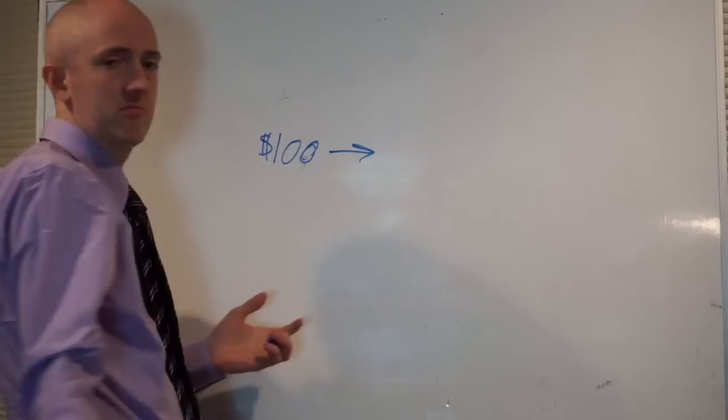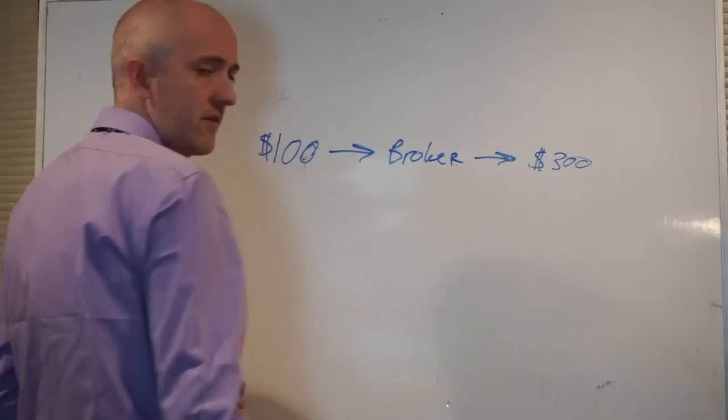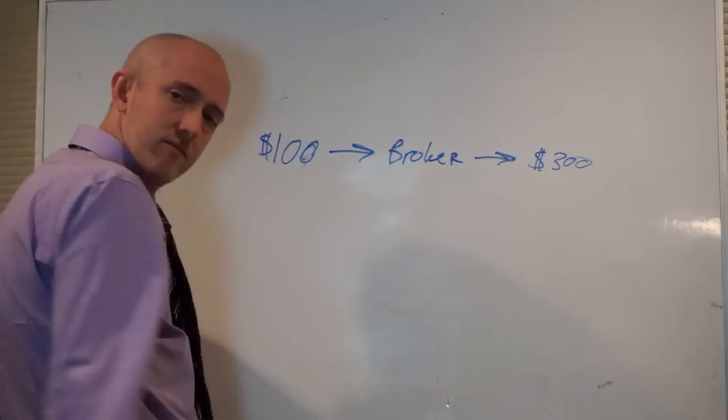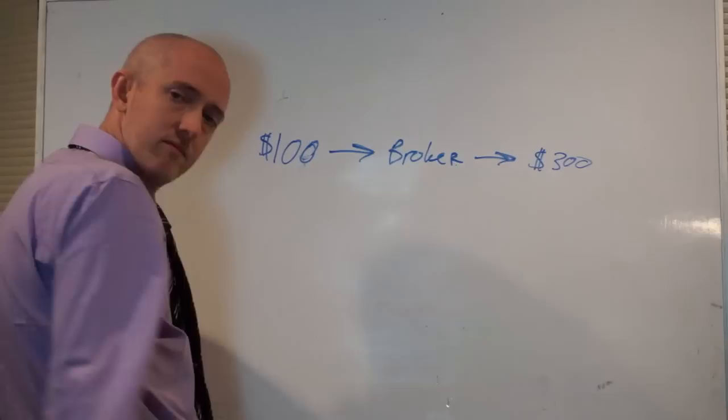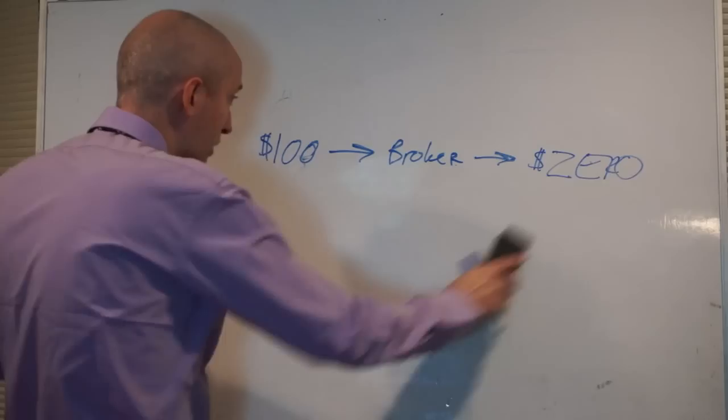Well you might have heard of a strategy like this: you're going to take a hundred dollar bill, you're going to give that to a broker, and then what the broker is going to do is he's going to invest this hundred dollars and you're going to make three hundred dollars. Okay, now what happens usually? Have you done that before? What happens? This turns into zero. Sucks, right? That's why everyone's mad at Wall Street.